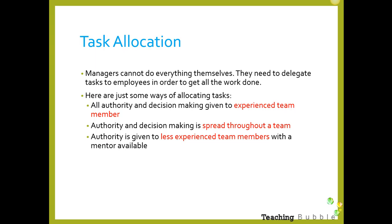There are many different ways to allocate tasks. First, you can allocate the task to a particular individual or to a group or team. The manager can allocate all the authority and decision making to an experienced team member — so they give it to someone who's really experienced. Or they could give the authority and decision making to a team so that they work together and make decisions on how to do particular tasks.